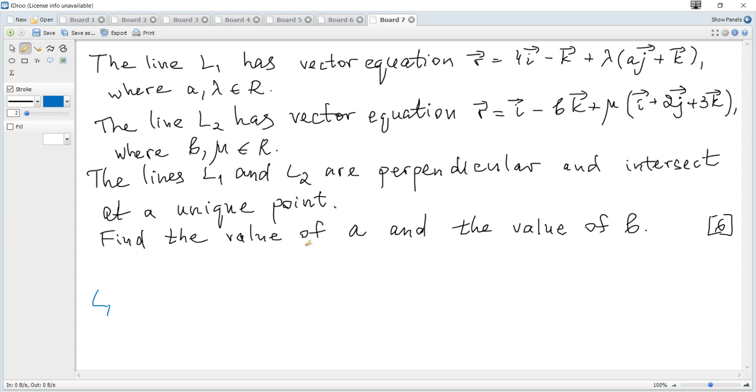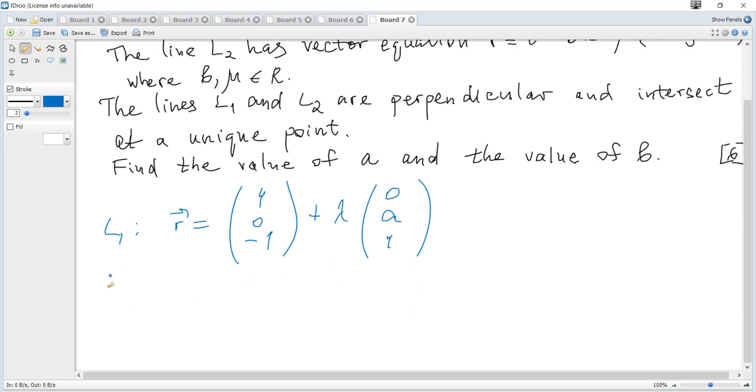I want to rewrite the given vector equations in column form. You may use the given form directly. So for L1 it becomes r equals (4, 0, -1) plus lambda (0, A, 1).